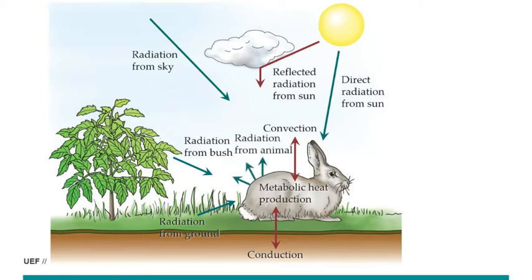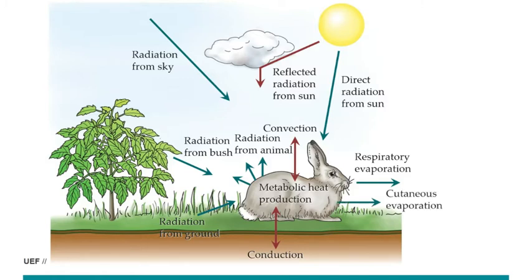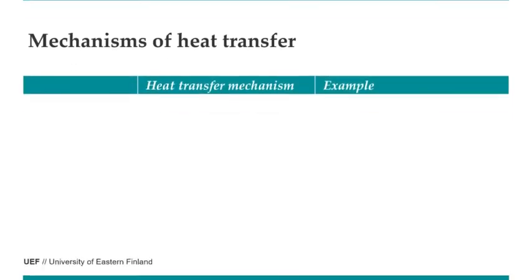Just as there is radiation from the ground and bush, there is also radiation from the animal. Because it has a high body temperature, there is more radiation from this rabbit than from the bush. Because it is receiving a large amount of heat from different sources plus metabolic heat production, it tries to cool down — usually through respiration or evaporation of water. If it gets windy, that drastically increases convection and the animal may feel cool, or in winter time, cold. So we have four different mechanisms of heat transfer.